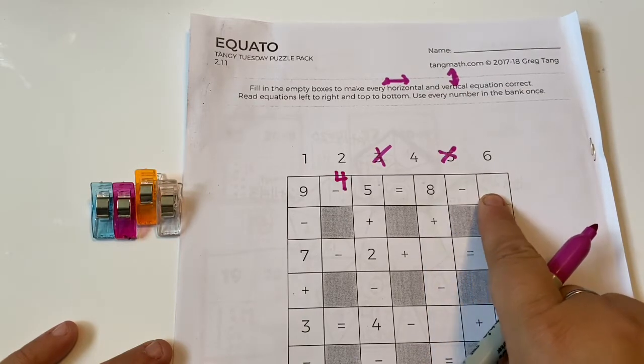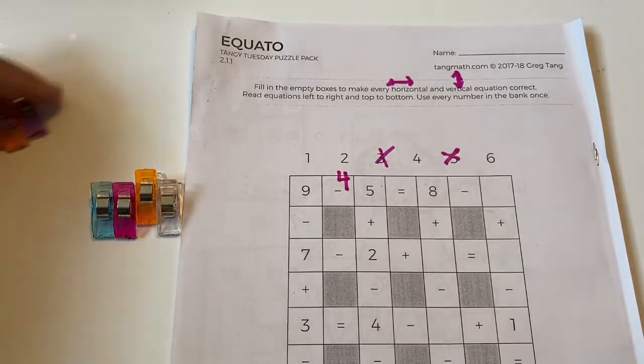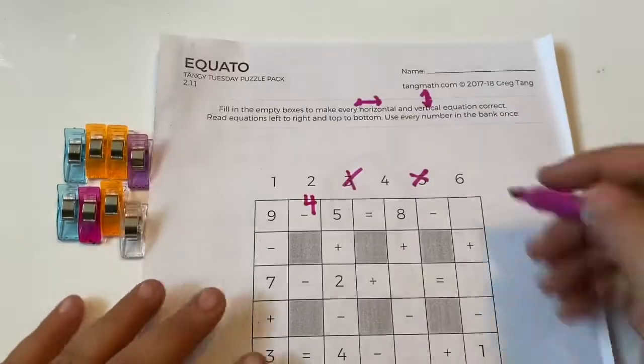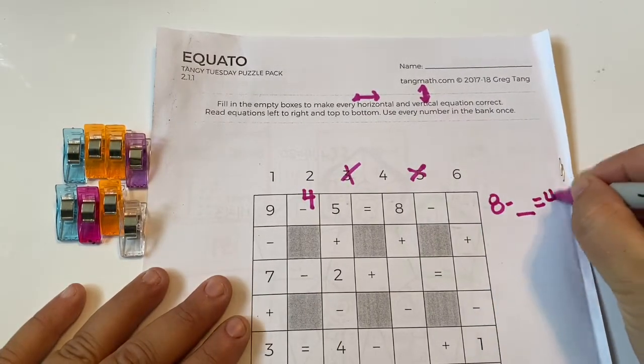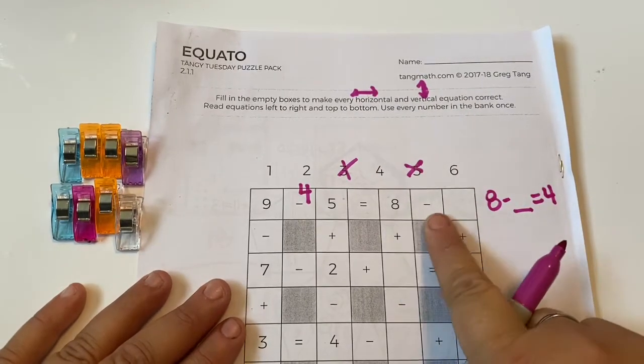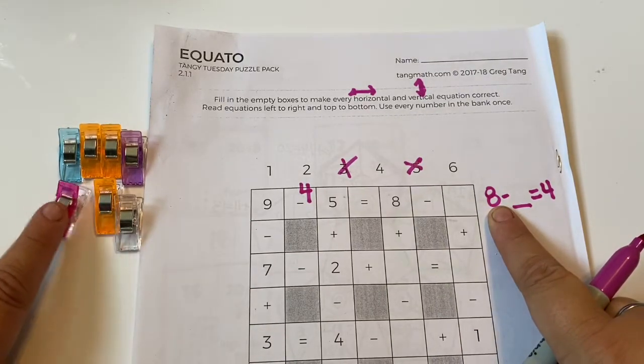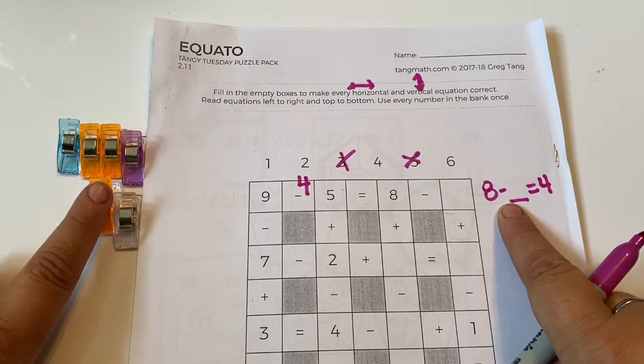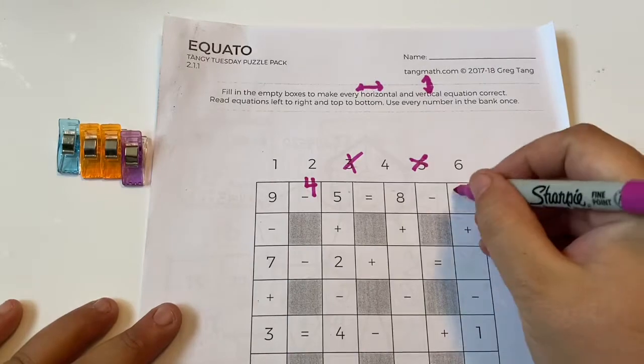Eight minus something has to equal four. So here's eight. And the equation that we're solving for looks like this: eight minus something equals four. So I'm just gonna start taking away and see what gets to four. Eight minus one is seven. Eight minus two is six. Eight minus three is five. Eight minus four is four. So the answer that goes here is four.